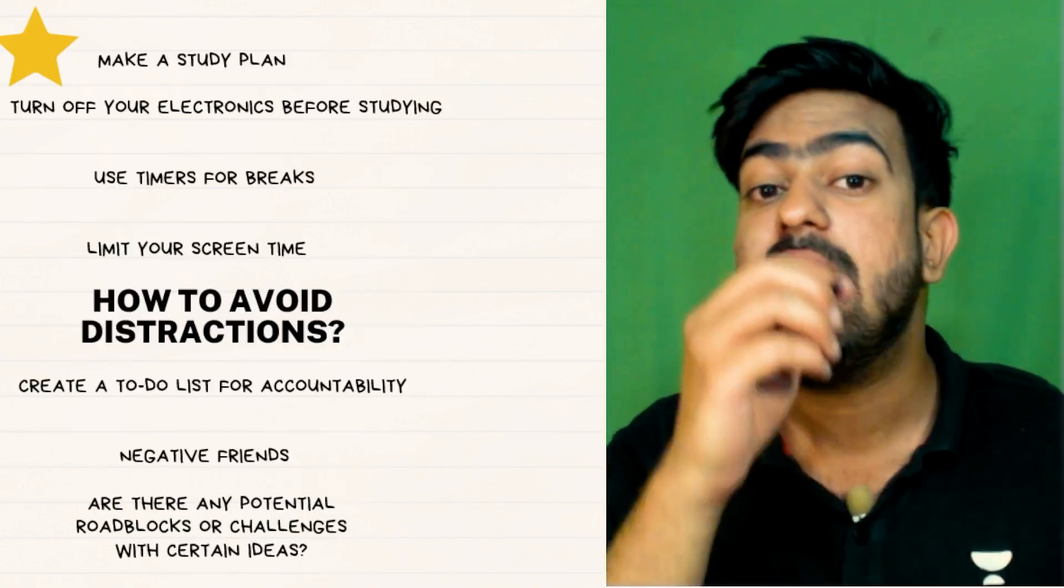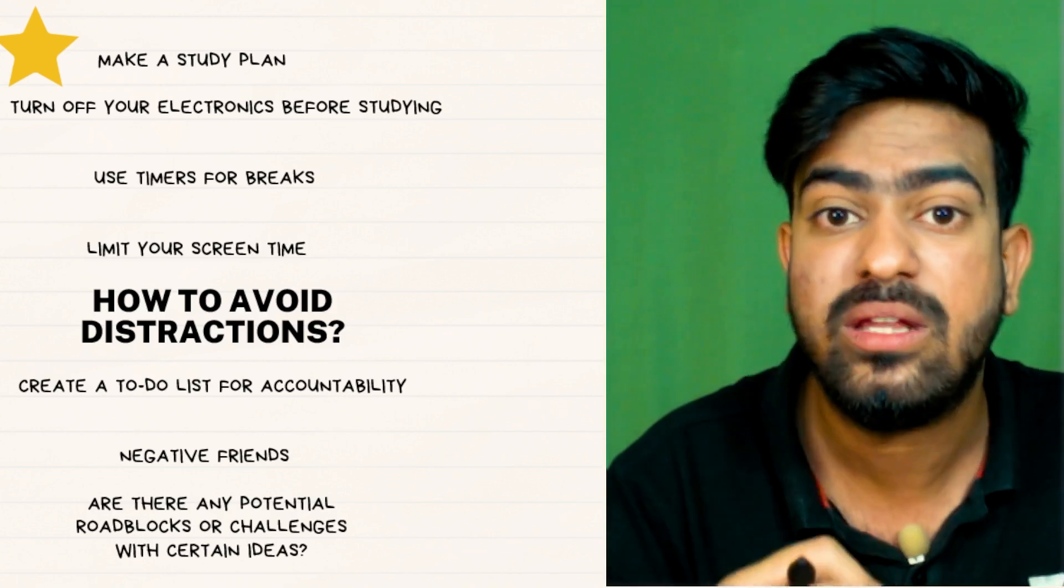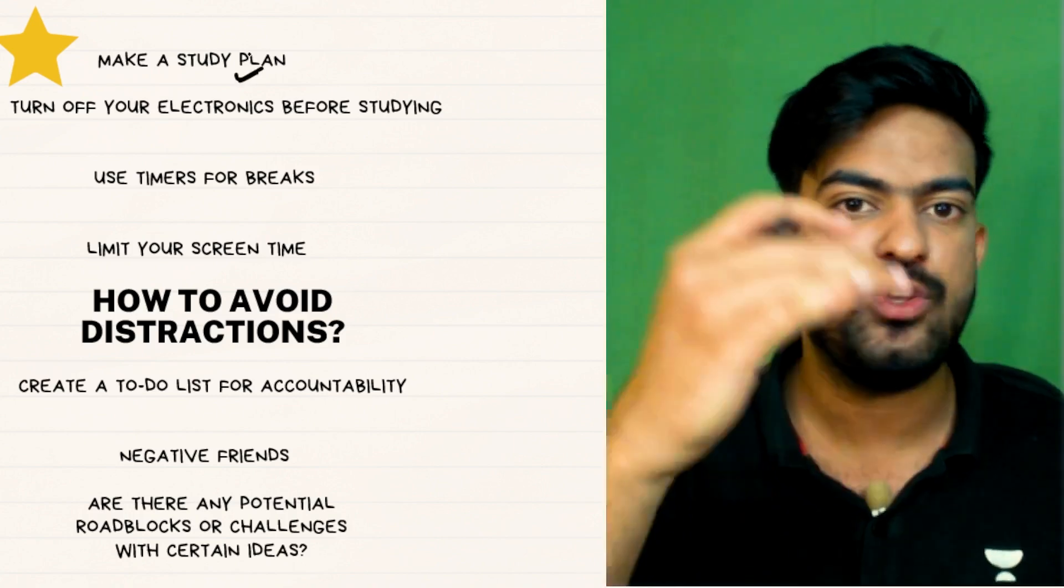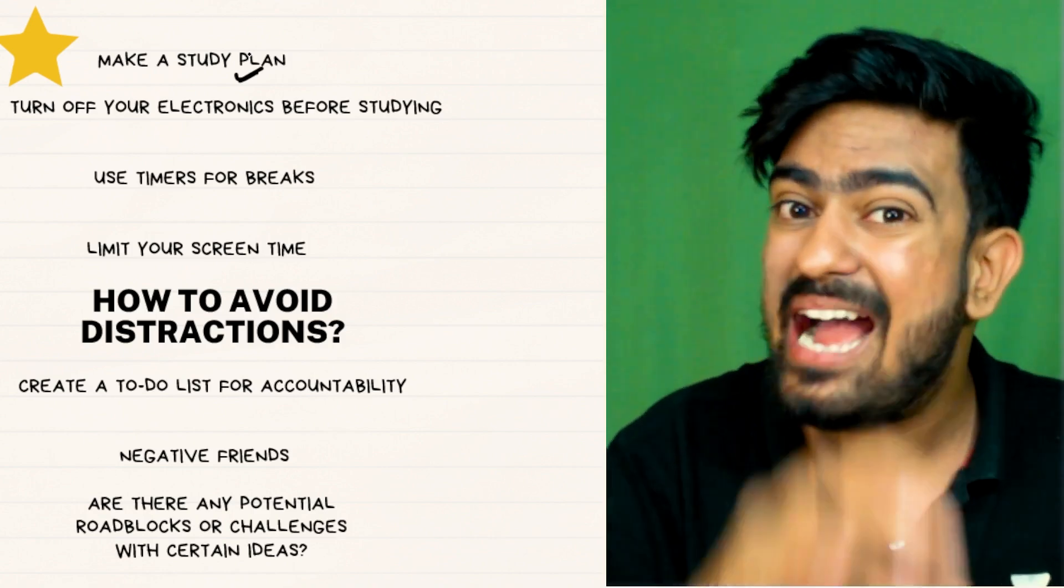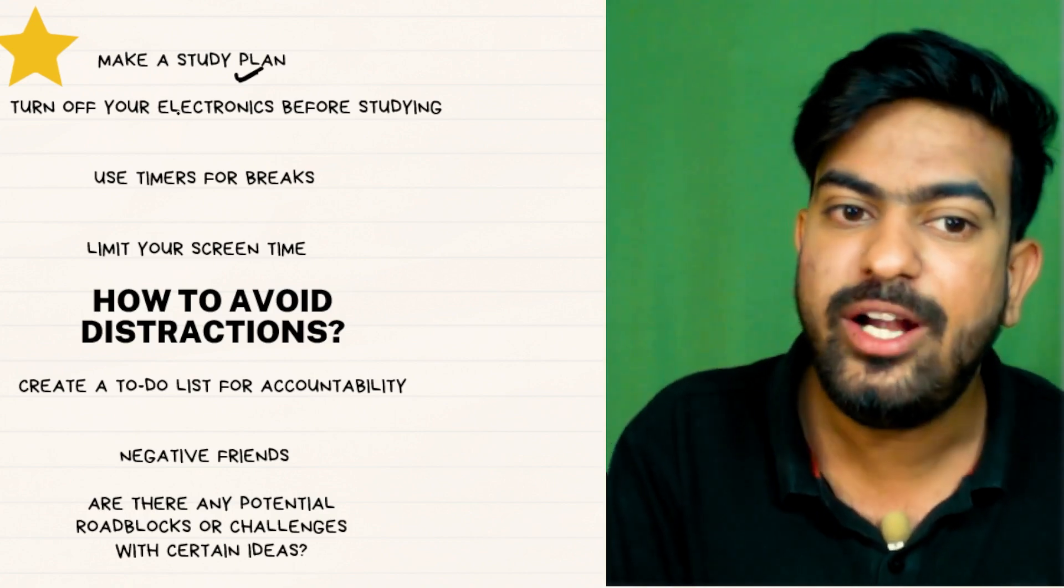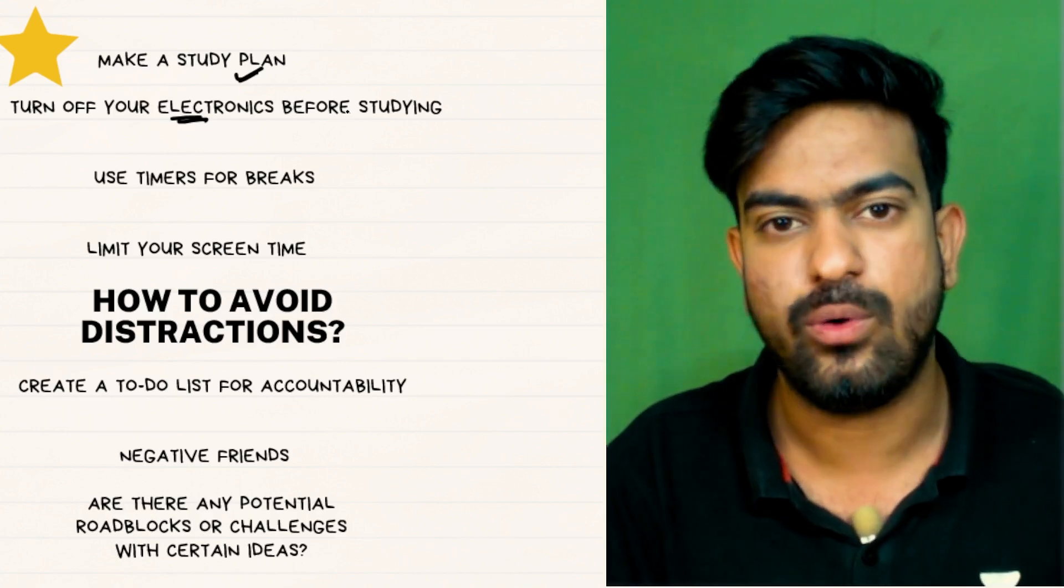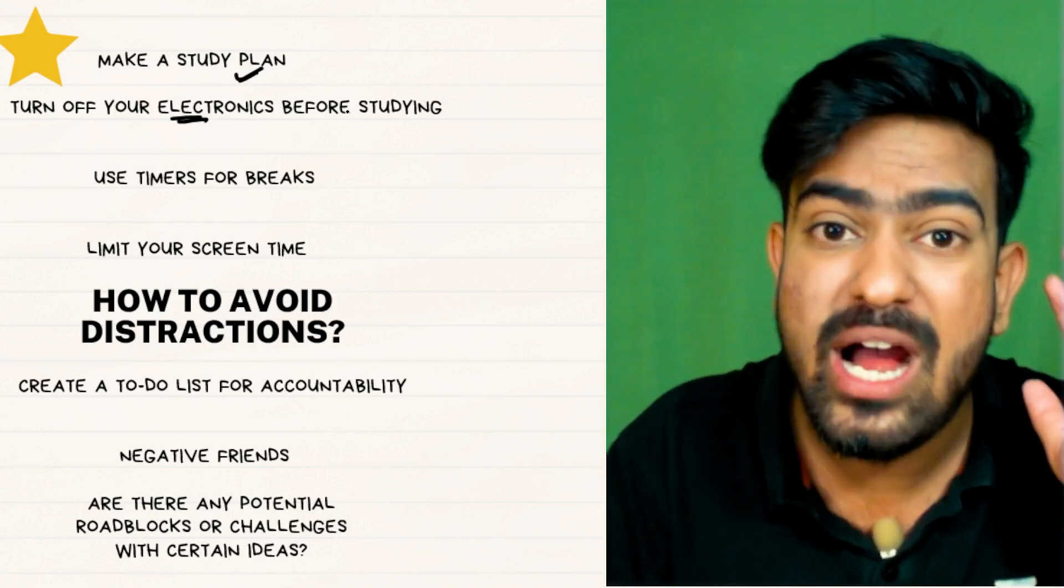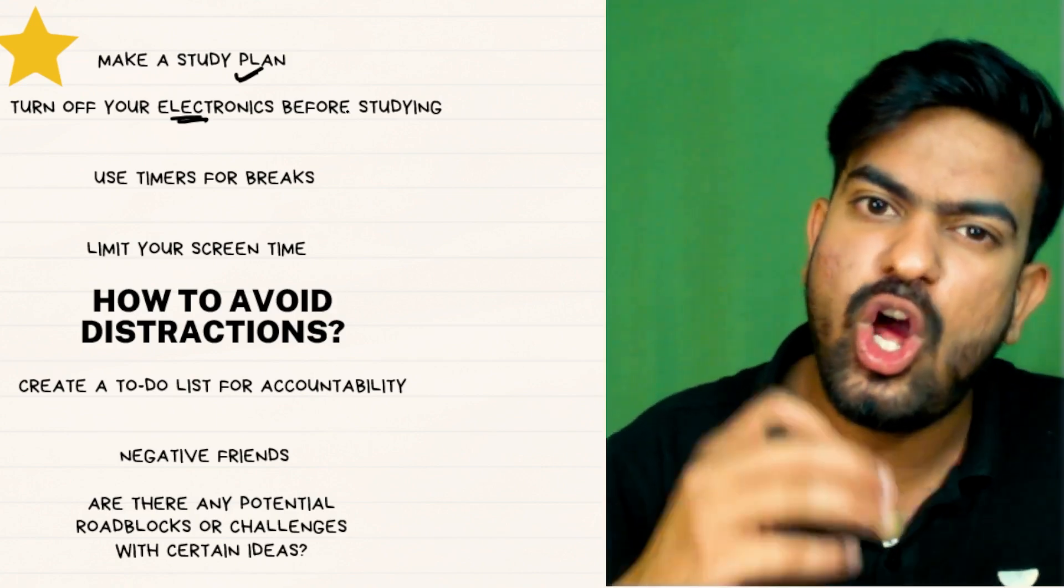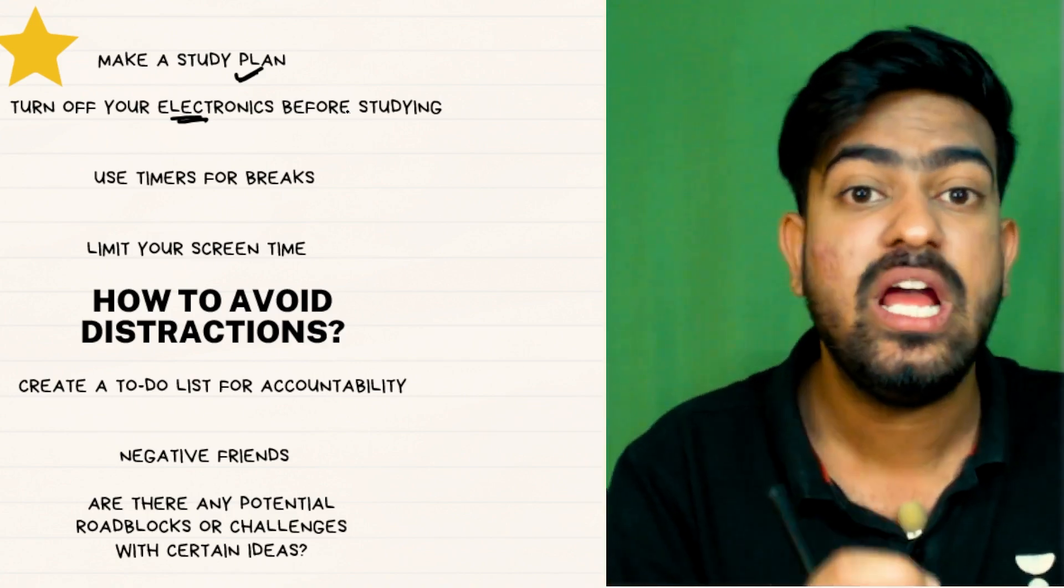Next, distraction stuff. Distractions is a very big thing which is coming in our way. So first of all make a study plan. If you're going to have a study plan, you tend to have some deadlines and you will be wasting your time little less. Now turn off all your electronics before studying. Yes, if you are studying, switch off your mobile phone, switch off the Instagram. If you can't switch off the mobile phone, log off, log off from all social media. Login again after you have studied. Because the notifications which we get is deteriorating our concentration. This is very necessary.